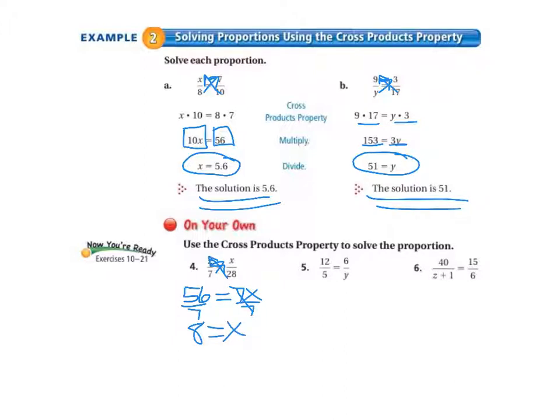Moving on to number 5. y times 12 equals 12y and 6 times 5 equals 30. When we solve for y, we have y equal to 30/12.